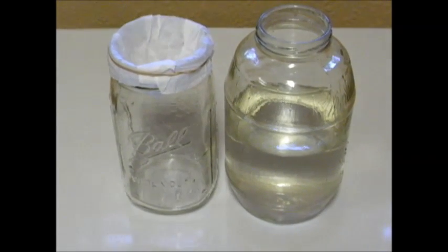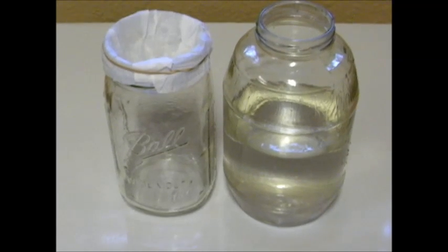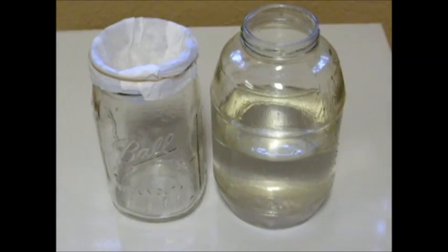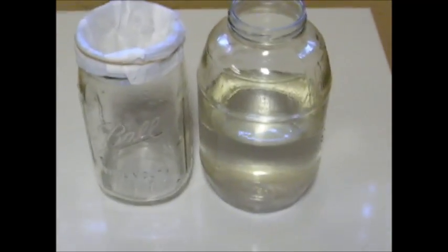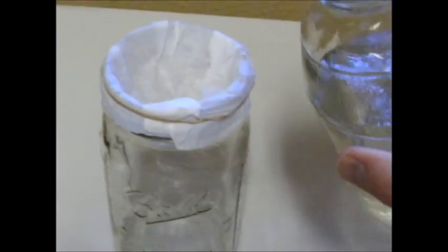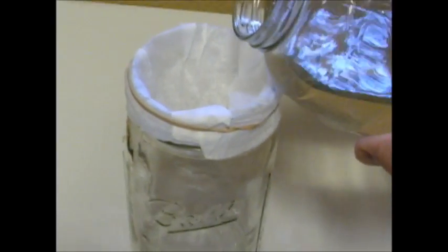You see the rubber band there that's holding the paper coffee filter in place and a batch of colloidal silver on the right. And all you have to do is take your batch of colloidal silver, which I'm going to show you right here, and just slowly pour it through the paper coffee filter.